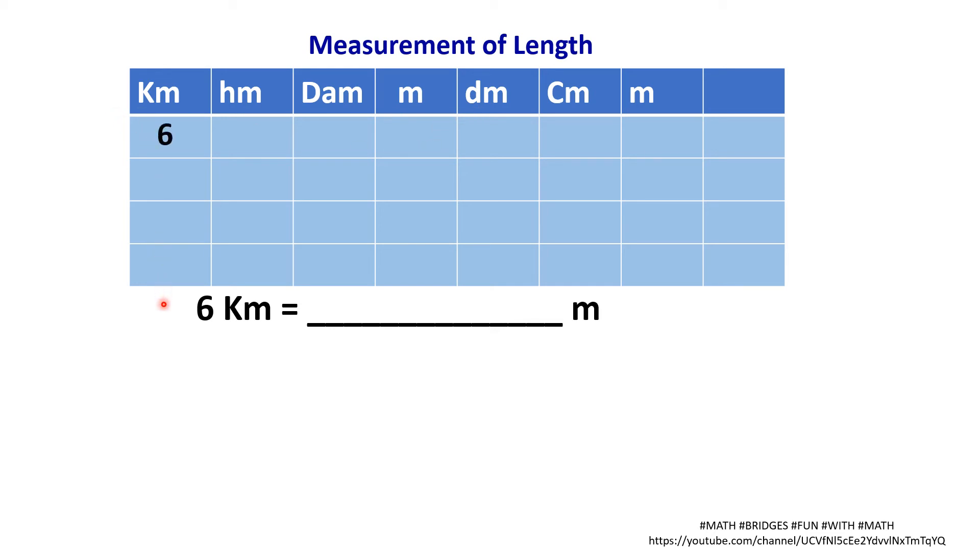So near kilometer, you write 6, converting to meters. Where is meter? Here, write 0. So in between also, you take zeros. Therefore, 6 kilometers is how many meters? 6,000 meters.